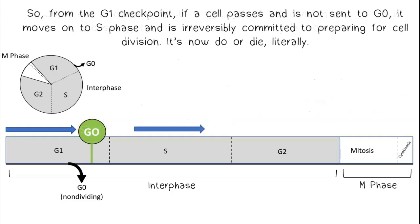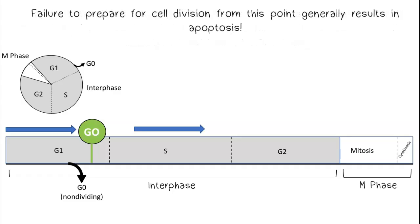From the G1 checkpoint, if a cell passes and is not sent to G0, it moves on to S phase, and is irreversibly committed to preparing for cell division. It's now do or die literally. Failure to prepare for cell division from this point generally results in apoptosis.